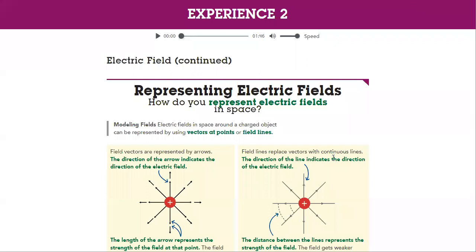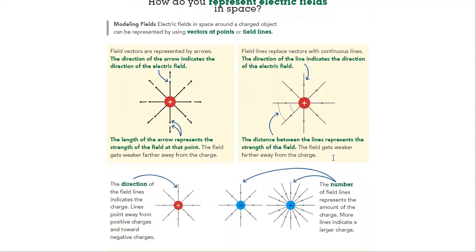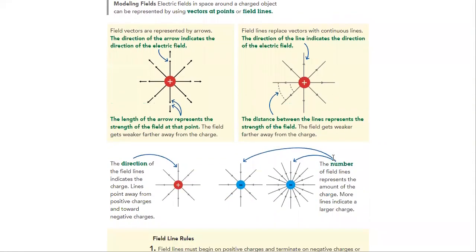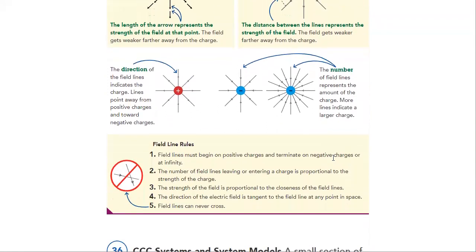Then, we will learn what's the difference between electric field, how to represent it in space. Electric field, the direction from positively charged and negatively charged. From positively charged, it goes outward. And for the negatively charged, it goes inward.